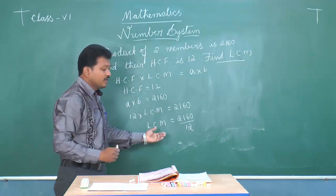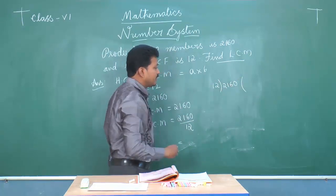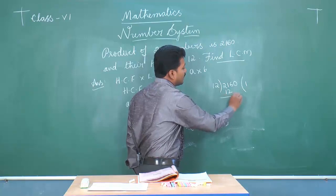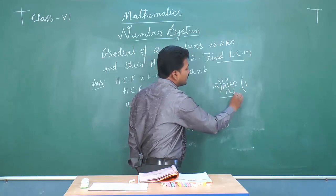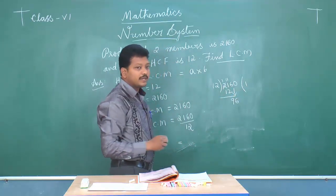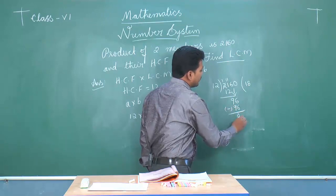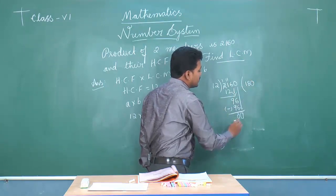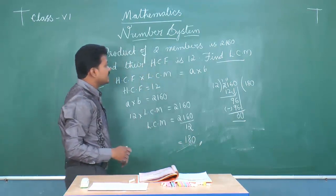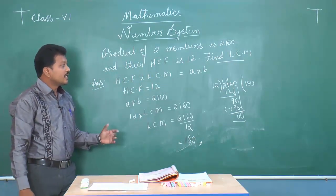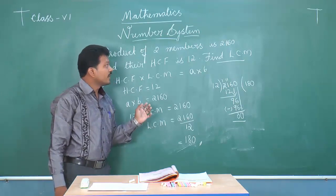Let us simplify 2160 divided by 12 using the long division method. 12 into 21 is 12 once giving 12; 21 minus 12 is 9, bring down 6 to get 96. 12 eights are 96; remainder 0. Bring down 0, giving 0. Therefore, LCM of the two numbers equals 180. This is the procedure to find either LCM or HCF using the relation. If one number is given, we can find the other using the same procedure.